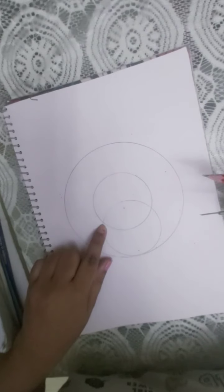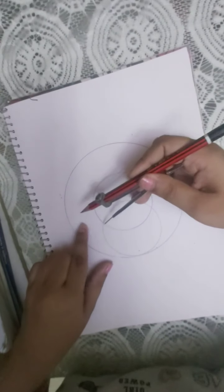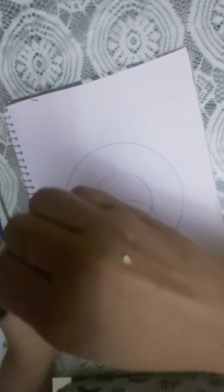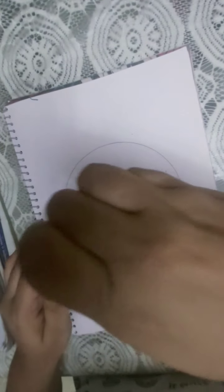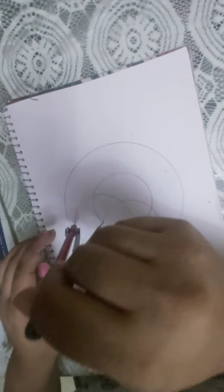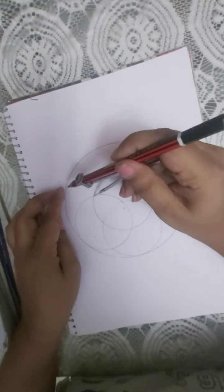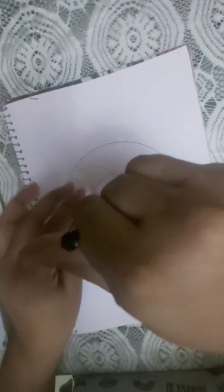Now where the smaller circle and the new circle are meeting, at that point we will put our compass and make a new circle. We will continue this procedure. Check this step now.